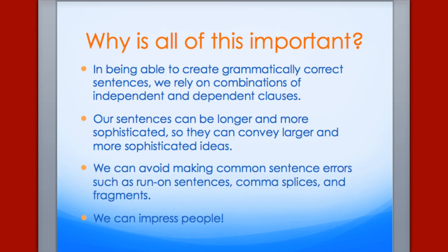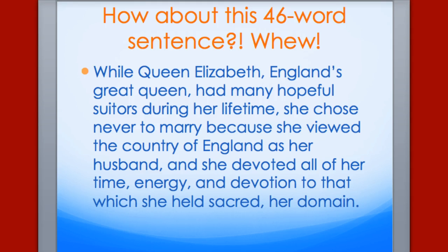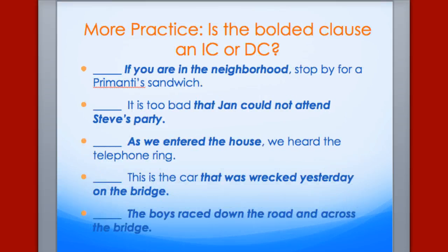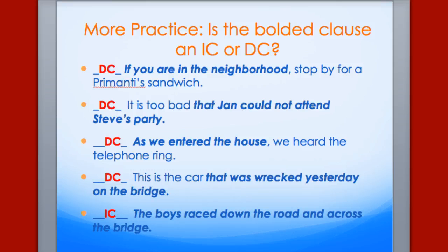Now let's take a look at why this is all important. First of all, we want you to create grammatically correct sentences. To do that, you're going to need to be able to combine different types of clauses. You can start using semicolons in a couple of weeks if you don't already know how to use them, and knowing dependent and independent clauses will help you put that together better. You will also avoid making common sentence errors. Here is a 46-word sentence — it's a pretty long sentence, but it is actually grammatically correct. If you just walk up to somebody in the hall and say 'that Jan could not attend Steve's party,' that's clearly an incomplete thought.